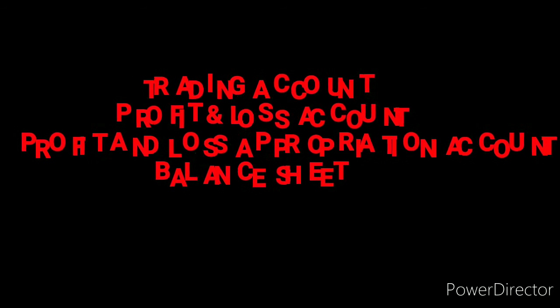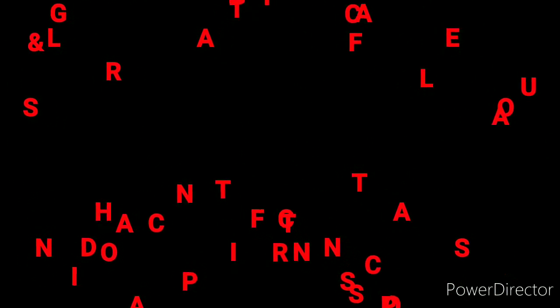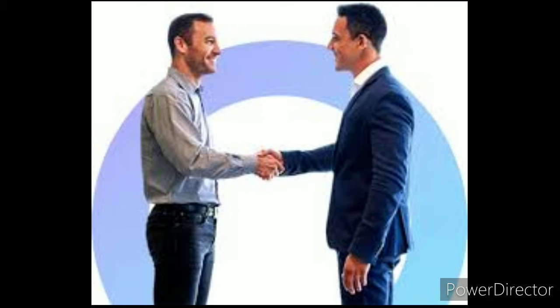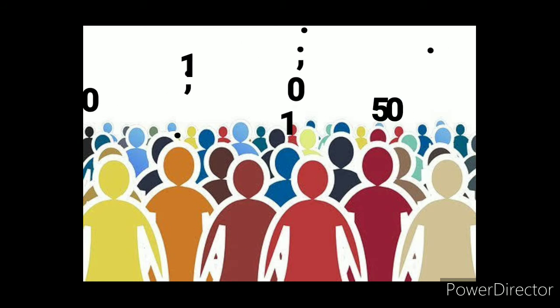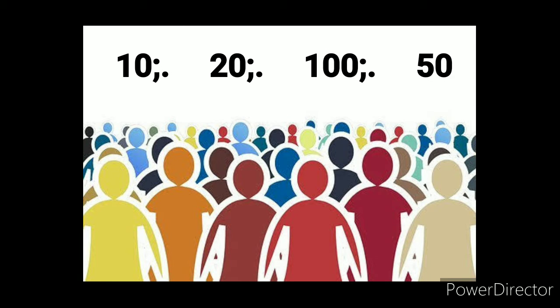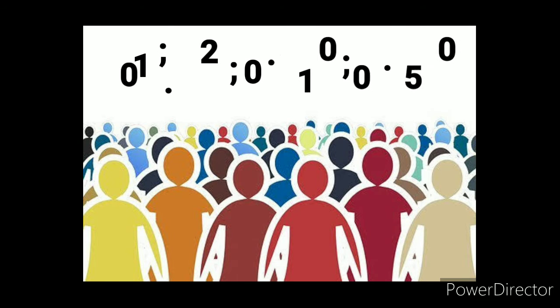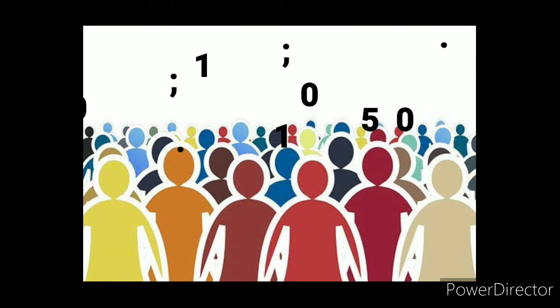Special features of a partnership firm: the minimum number of members is 2. The maximum is 10 for banking business and 20 for other businesses as per the 1932 Act. The 2013 Act says the maximum number of members in a partnership is 100. However, the 2014 amendment revised this to 50 as the maximum number of members in a partnership firm.